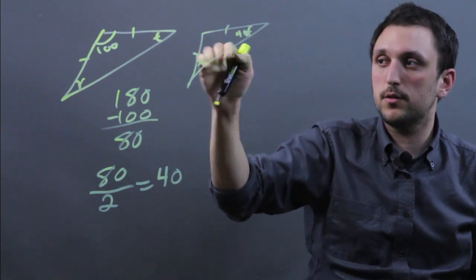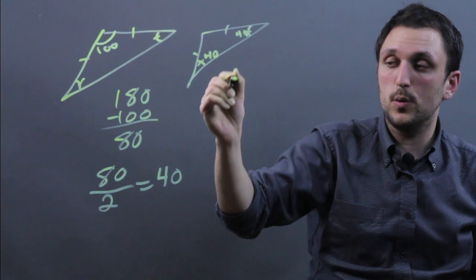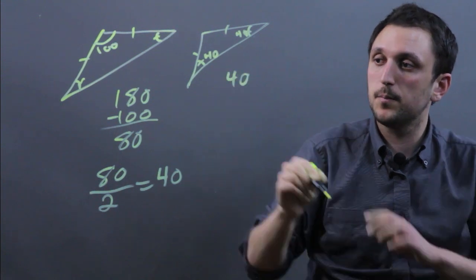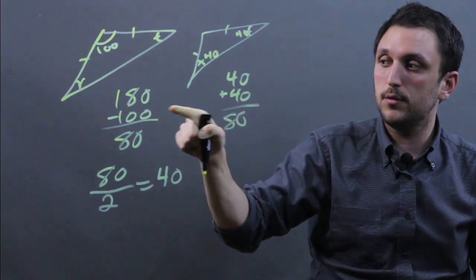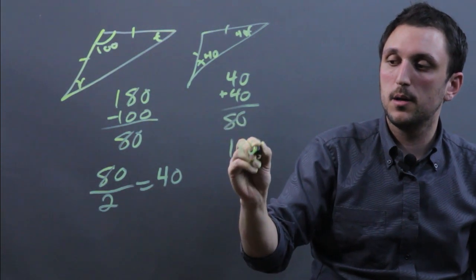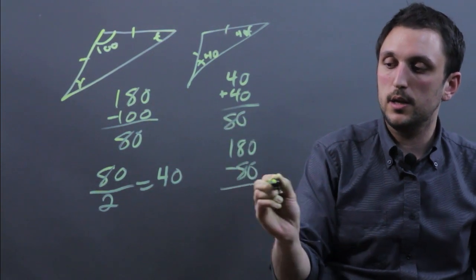If this is 40, then this is 40. So you add it up: 40 plus 40 is 80. Then 180 minus 80 is 100.